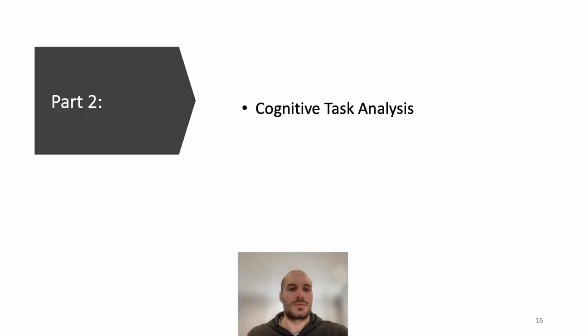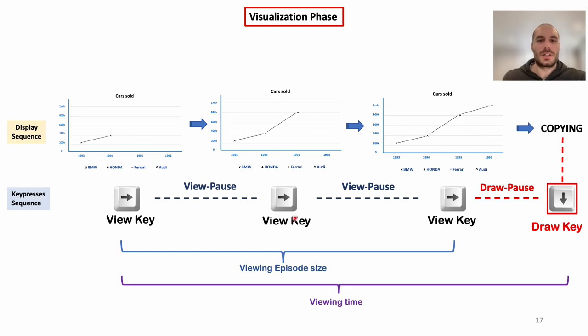In this section, we are going to discuss a cognitive task analysis using a CPM-GOMS model in order to better understand the cognitive processes required by TIPS. Particularly, we built the CPM-GOMS model in order to explain the participant's behavior reflected through the view pause, which is the pause between two view key presses, and the draw pause, which is the pause before pressing the draw key.